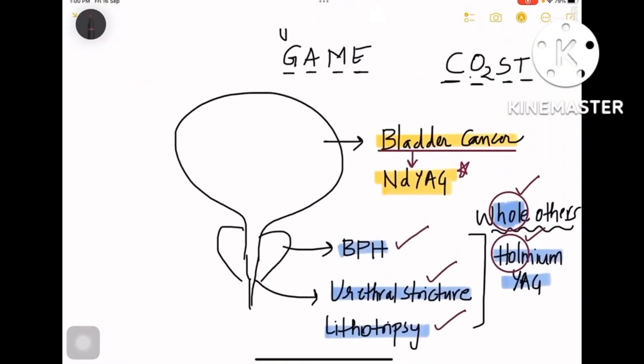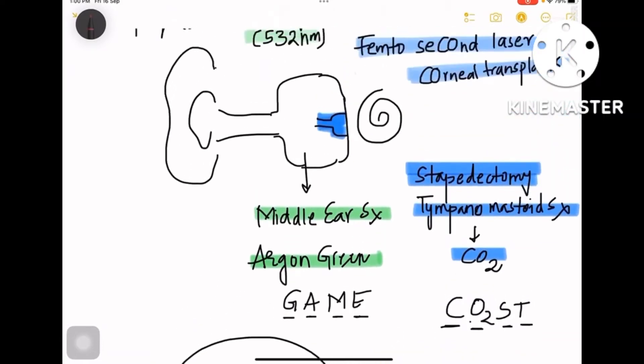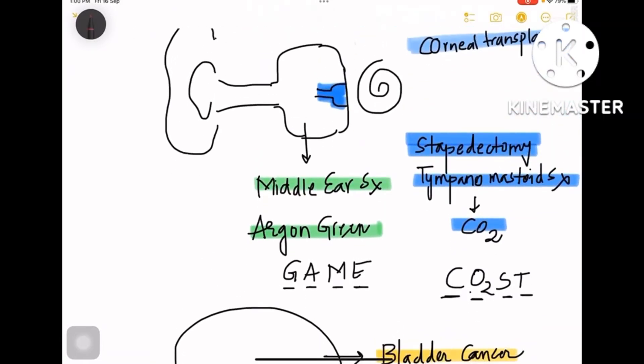Now let us discuss ENT surgeries. The mnemonic is 'costly game.' So GAME: that is Argon Green, A and G, is for middle ear. So Argon Green laser is for middle ear surgeries. Coming to COST: CO2 laser, that is carbon dioxide laser, is used for two different surgeries.